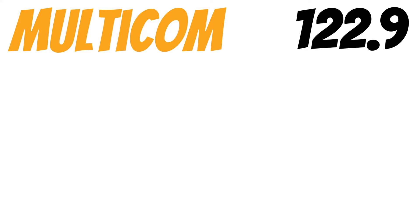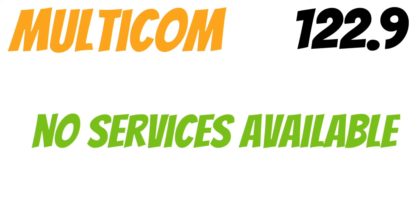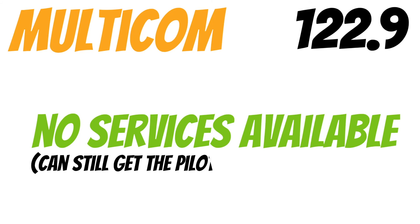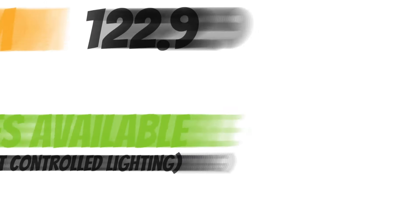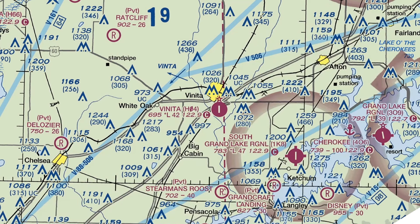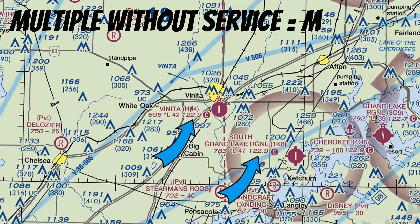There's also the multicom frequency. Anytime the CTAF frequency is 122.9, it's usually a multicom and not a unicom. At airfields with a multicom frequency, there's no service provided on the CTAF frequency — except that you can still get pilot-controlled lighting if your airfield has it. Looking at the VFR sectional, notice a lot of airfields out there have multicom frequencies — multiple airports without any kind of service. These are probably more common than any other CTAF frequency, which is probably why they call it multicom. These are the most important fields to include the airfield name when making your radio calls.